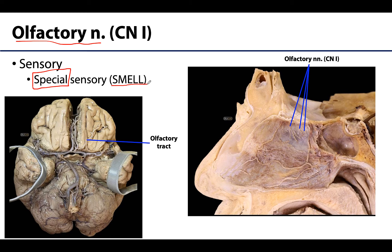The olfactory nerve is associated with the sensation of odors resulting from detection of aerialized substances in the environment. The olfactory receptor neuron cell bodies are located in the olfactory part of the nasal mucosa, in the roof of the nasal cavity, including the nasal septum and the medial wall of the superior nasal concha. These fibers connect to the olfactory bulb, which lies in contact with the orbital surface of the frontal lobe, and axons of the secondary neurons form the olfactory tract.